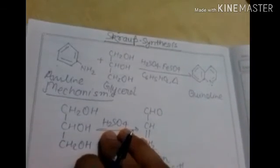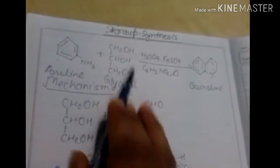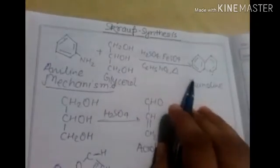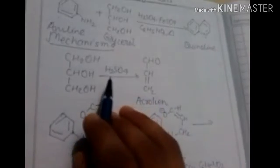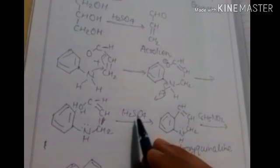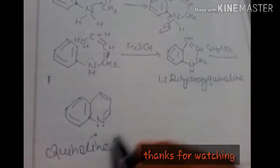Let us revise what we did. Aniline reacts with H2SO4 and nitrobenzene. Glycerol first forms the acrolein intermediate, which reacts with aniline and H2SO4 to give 1,2-dihydroquinoline. This then reacts with nitrobenzene and gives quinoline. In quinoline there are double bonds, and the reaction with nitrobenzene gives us quinoline finally.